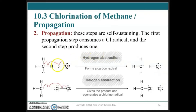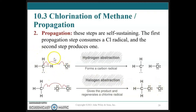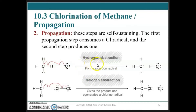In the propagation steps, we have hydrogen abstraction, and then our radical species cleaves the chlorine to give back our chlorine radical. At the end of the second step, we have the starting conditions of the first step. This propagation can go on indefinitely as long as there is a reactant with abstractable hydrogens present — the reaction is self-sustaining.